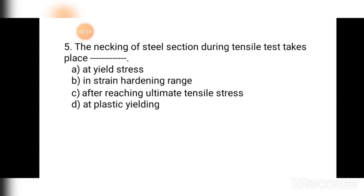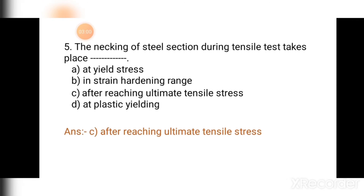Question number five: The necking of a steel section during a tensile test takes place — (a) at yield stress, (b) in strain hardening range, (c) after reaching ultimate tensile stress, (d) at plastic yielding. Observing the stress-strain curve carefully, necking takes place after reaching ultimate tensile stress. The correct answer is (c) after reaching ultimate tensile stress.